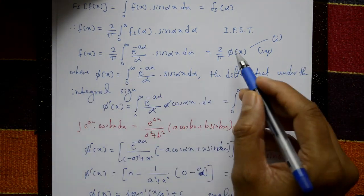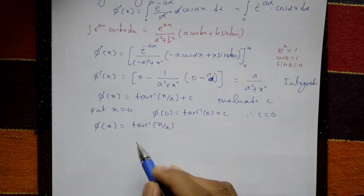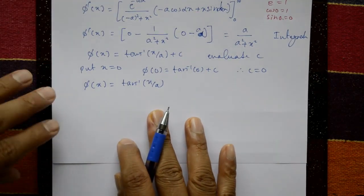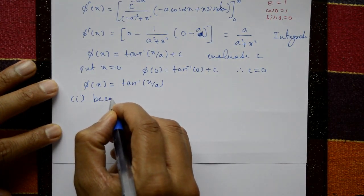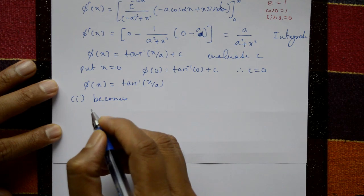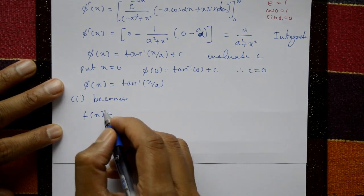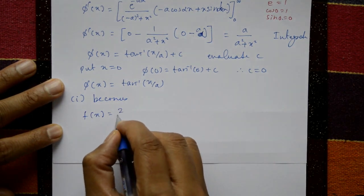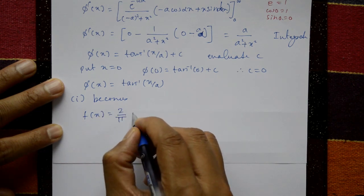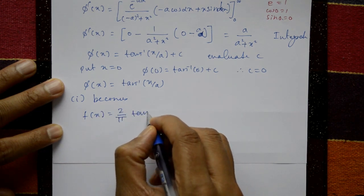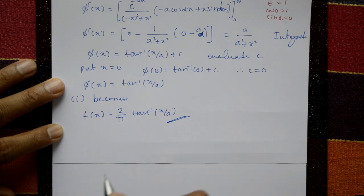Substituting φ(x) back into equation one: f(x) = (2/π) · φ(x) = (2/π) tan⁻¹(x/a). This is the required solution.